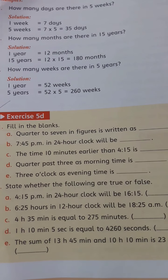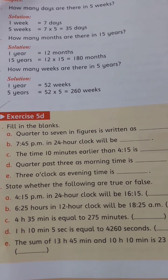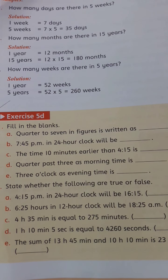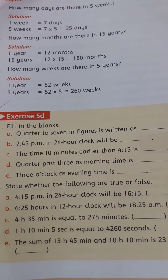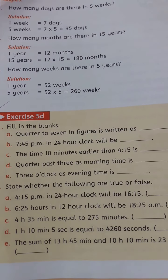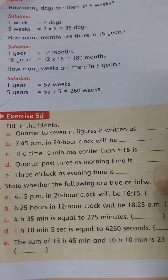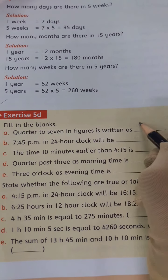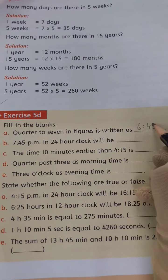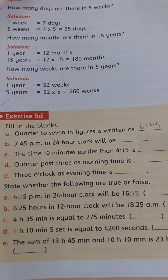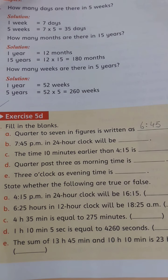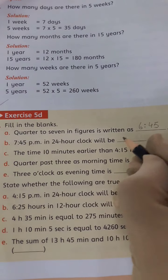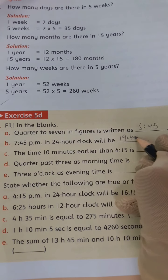Class 4, open page number 130 of your book. We will solve Exercise 5D, question number 1, fill in the blanks. Part A: quarter to 7 in figures is written as 6:45. Part B: 7:45 PM in 24-hour clock will be 19:45 hours.